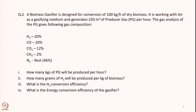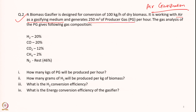The tutorial problem states: a biomass gasifier is designed for conversion of 100 kg of dry biomass. It is working with air as a gasifying medium — so this is an air gasification problem. It generates 250 normal meter cube of producer gas (the product gas of the gasification process), at normal temperature and pressure of 1 bar and 25°C.